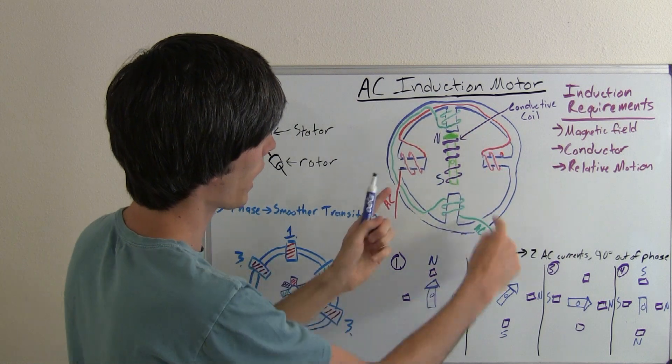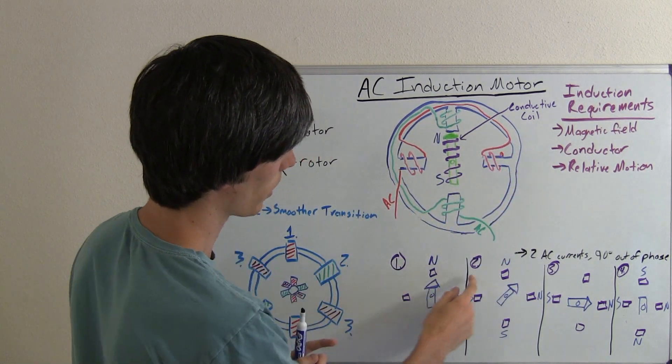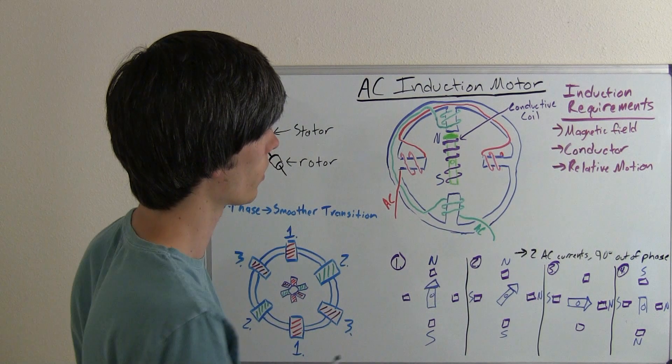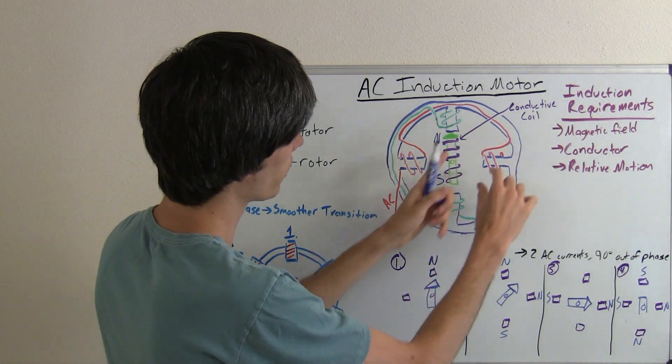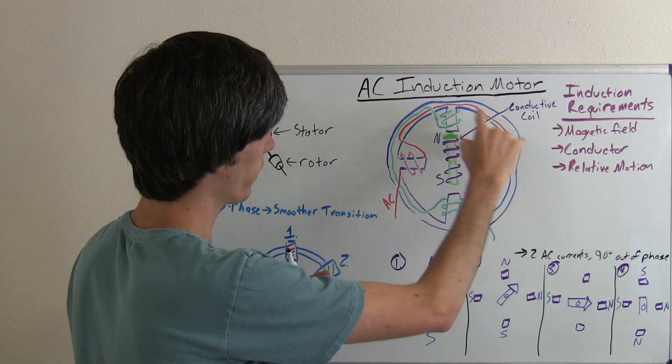So this just continually happens as the alternating currents change, steps one, two, three, four, five, six, and on forever, these magnetic fields will change and they just rotate about this.